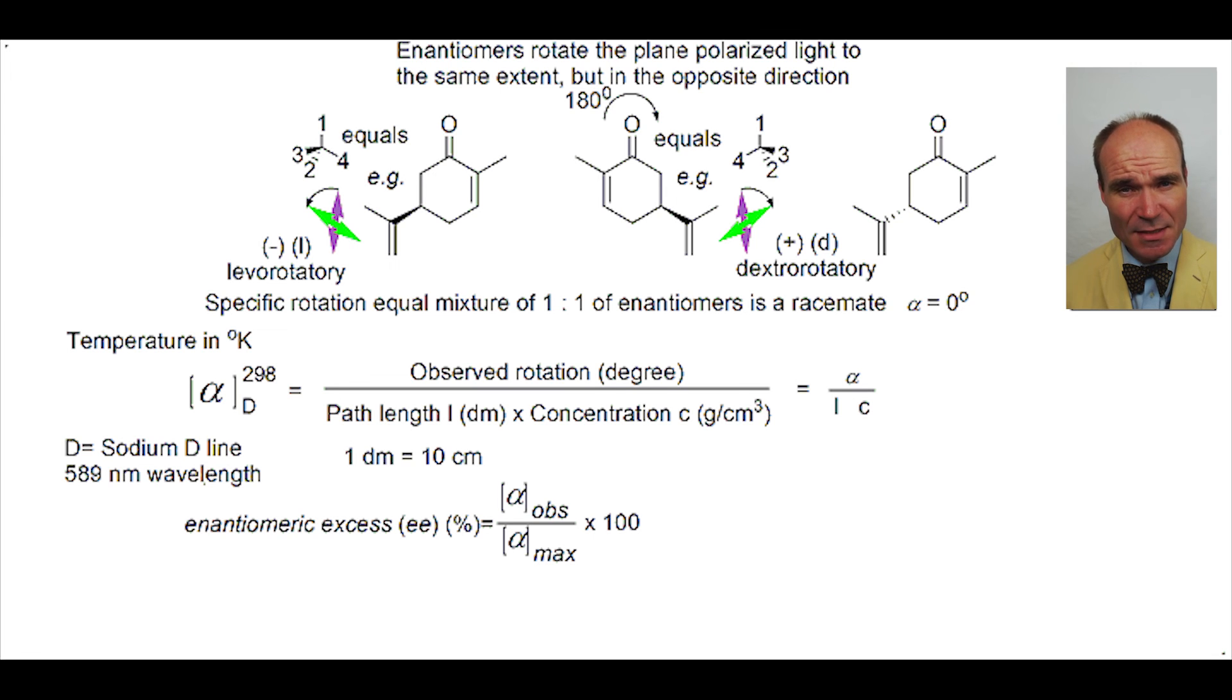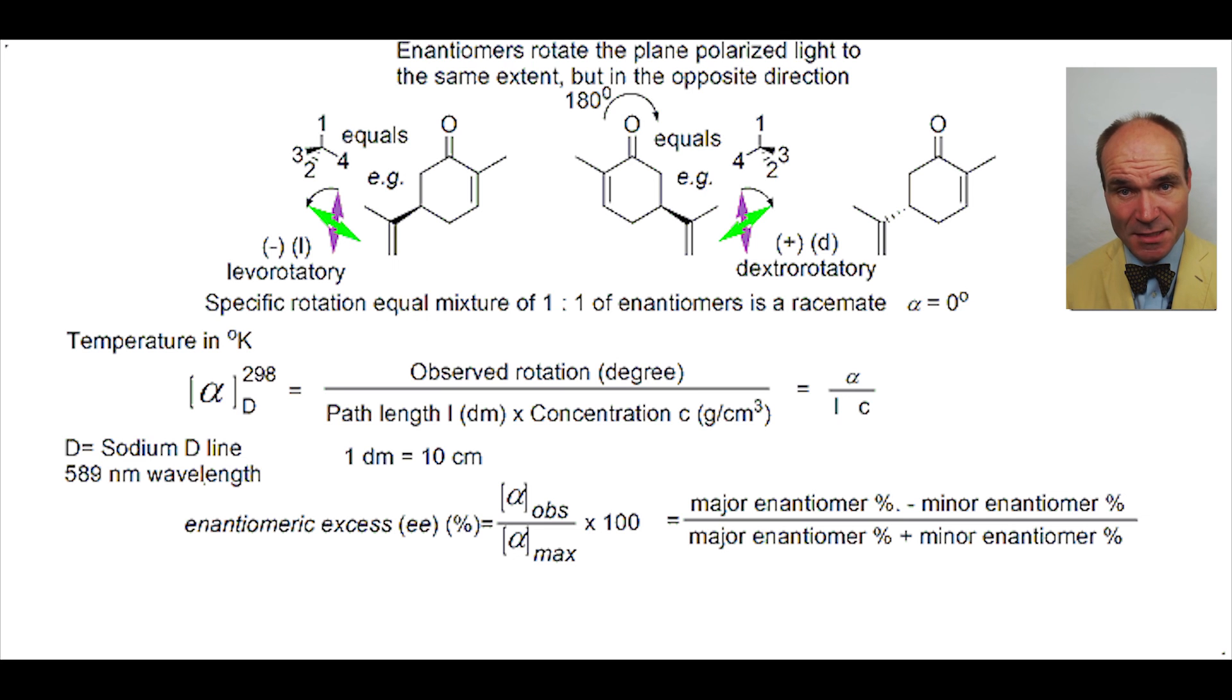Another way to express enantiomeric excess is the percentage of the major enantiomer minus the percentage of the minor enantiomer, divided by the percentage of the major enantiomer plus the percentage of the minor enantiomer, all multiplied by 100.